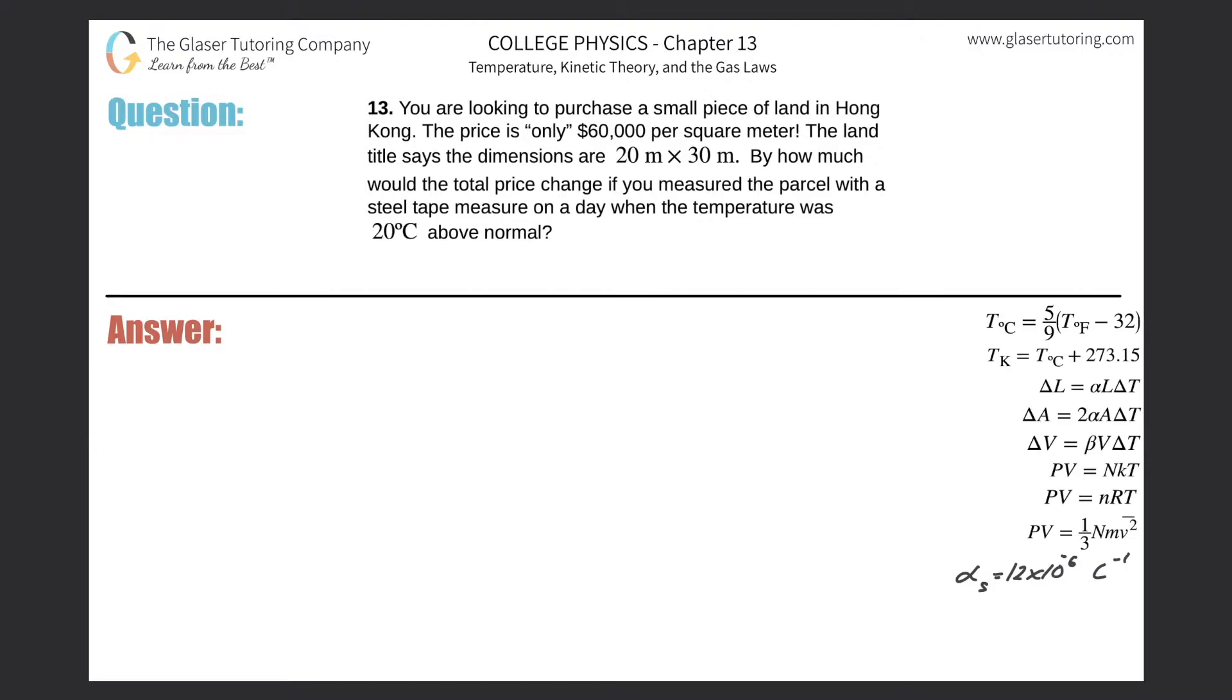Number 13: You are looking to purchase a small piece of land in Hong Kong. The price is only $60,000 per square meter. The land title says the dimensions are 20 meters by 30 meters. How much would the total price change if you measure the parcel with a steel tape measure on a day when the temperature was 20 degrees Celsius above normal?